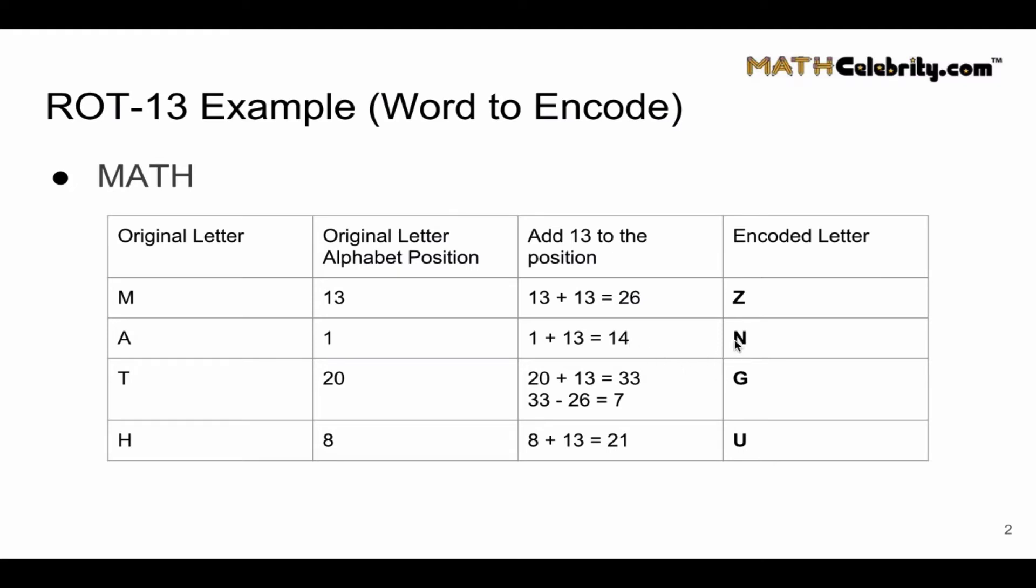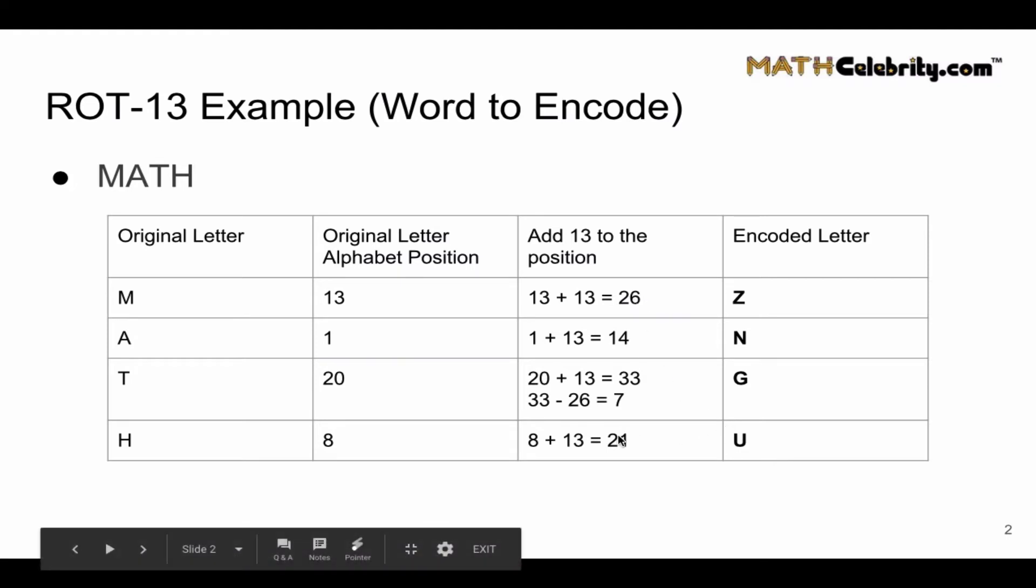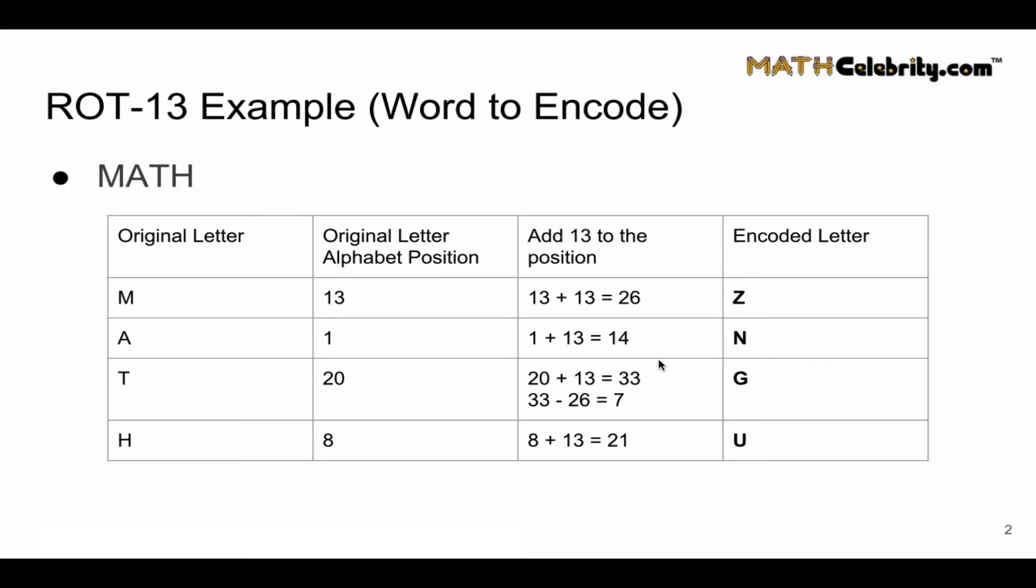14 is the position for N, Z is the 26th position in the alphabet, and U is 21. So our answer is, if we want to encrypt math, the word math using ROT13, it's going to be ZNGU. That's the new encoded word.